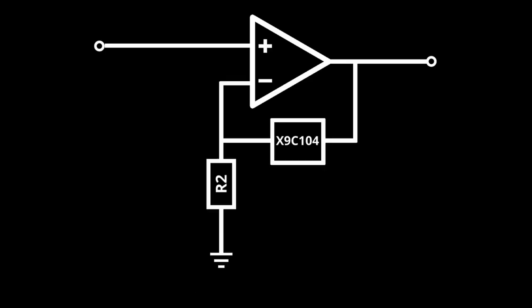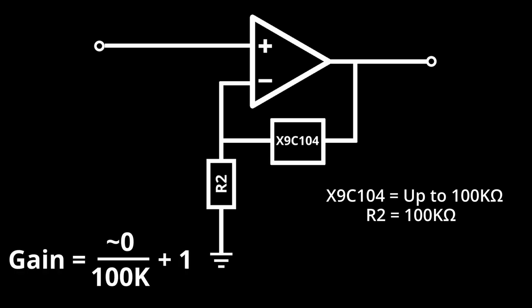The next thing we need to do is figure out what value of resistance to use for R2, now that R1 is our 0 to 100k digital potentiometer. If we leave R2 at 100k, like we had it before, then when our digipot is turned all the way down, the formula for gain will be nearly 0 divided by 100k, plus 1. So basically 1. Or no effective gain.